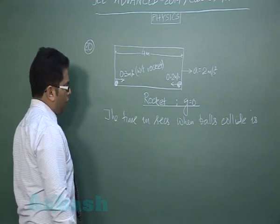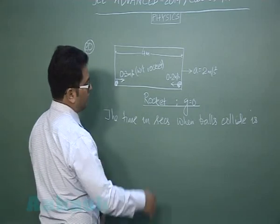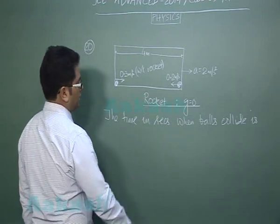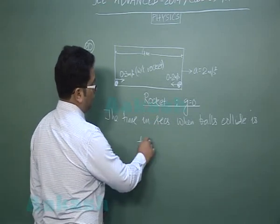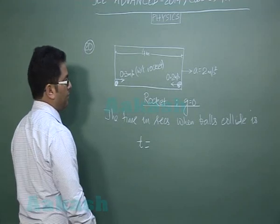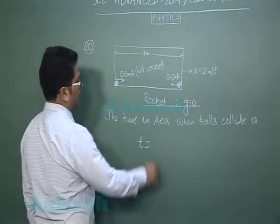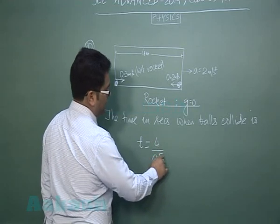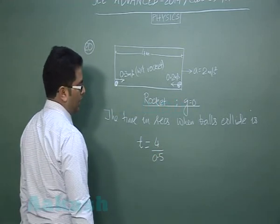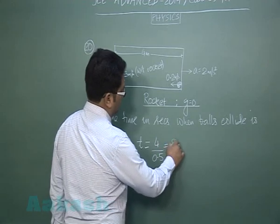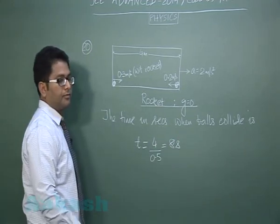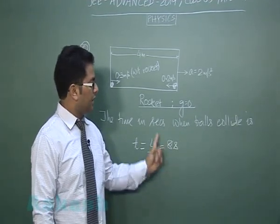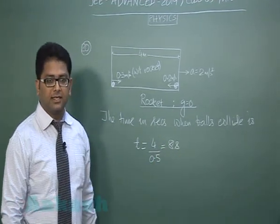That would go very easily because if you see with respect to rocket both the acceleration relative would be 0. So time would be easier if you see in relative frame of the rocket - the relative distance is 4, the relative velocity is 0.5, and the time comes out to be 8 seconds. And obviously we have to find the time in seconds so the integer that comes out to be is 8.